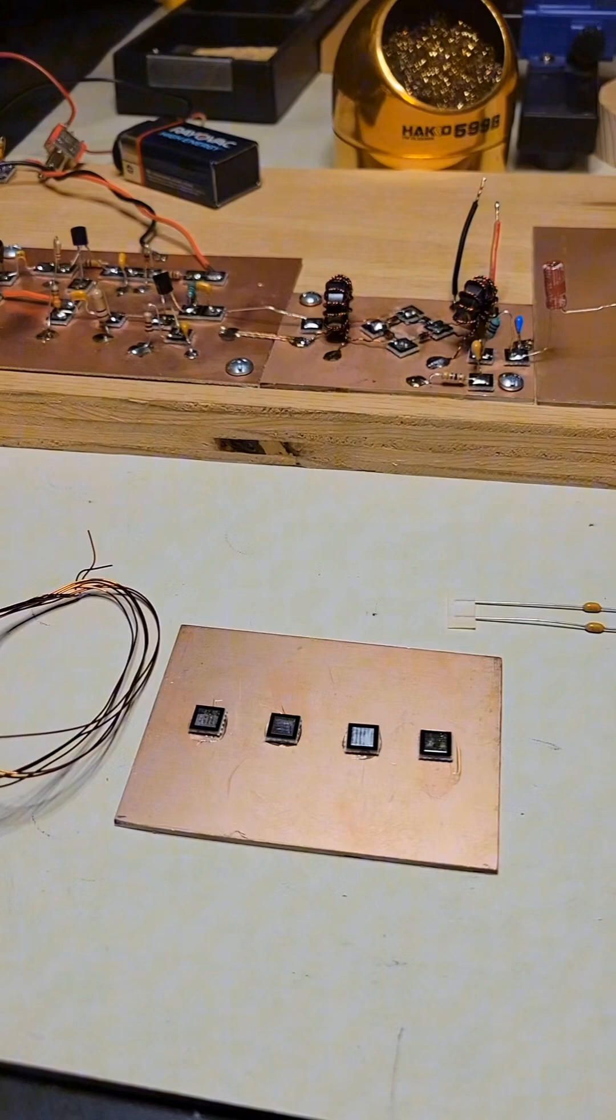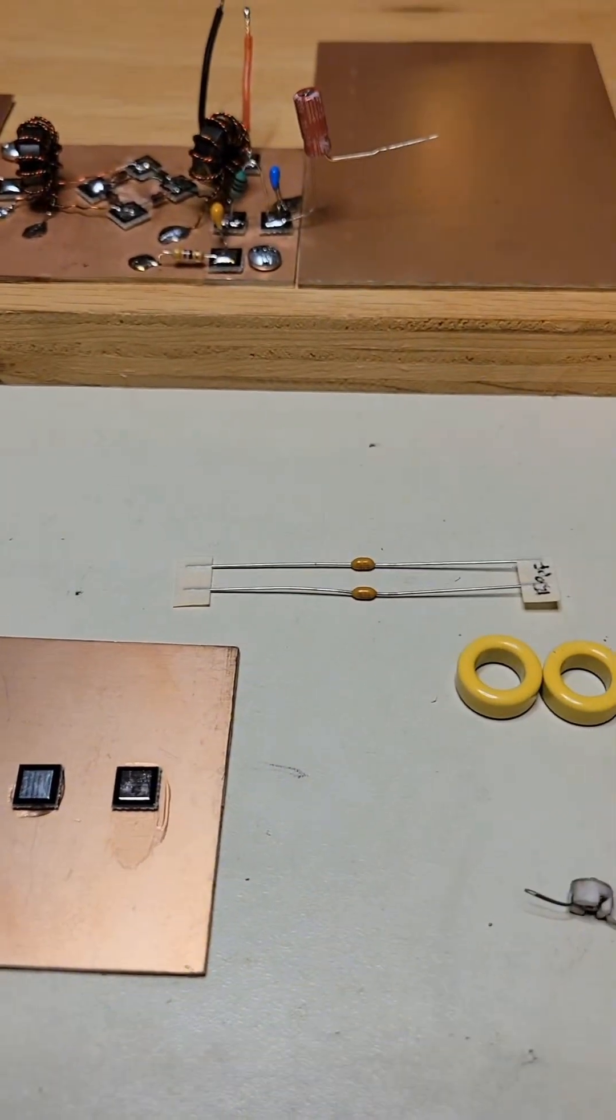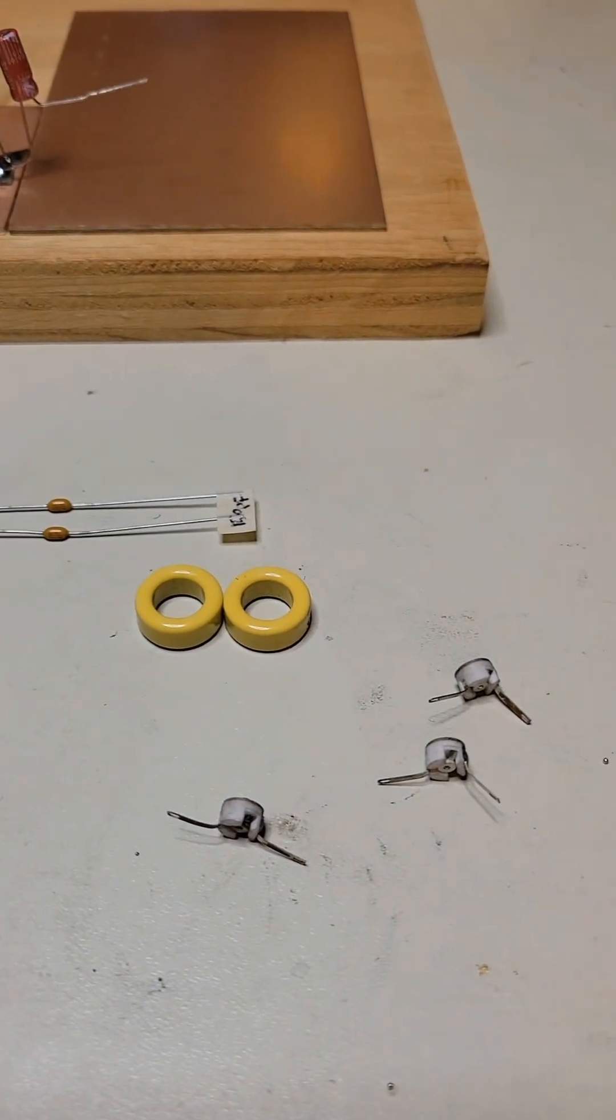So we have the magnet wire, some copper clad, some fixed caps, and some toroids, the T50-6s, and some trimmer caps.